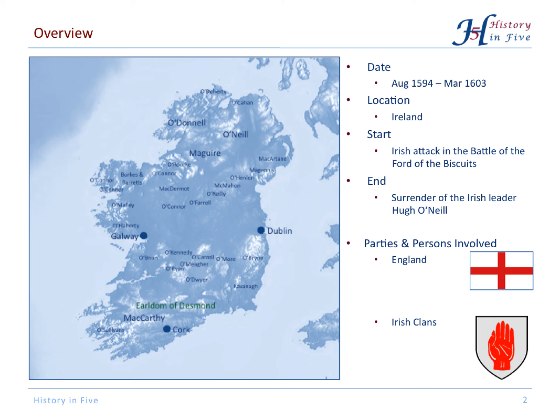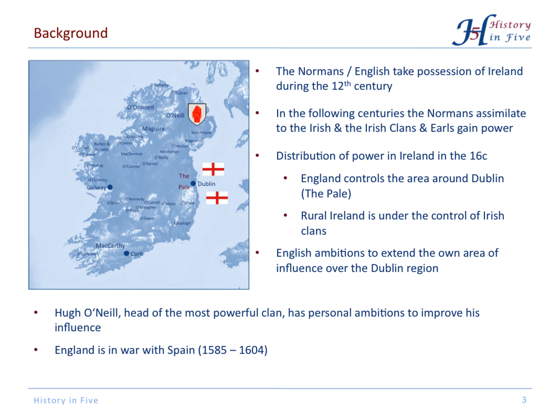England fought Irish clans, but also, by the end of the war, Spanish forces. For background: the Normans, or English if you will, took possession of Ireland during the 12th century. But in the following centuries, they assimilated to the Irish culture, and the Irish clans and earls gained more and more power.